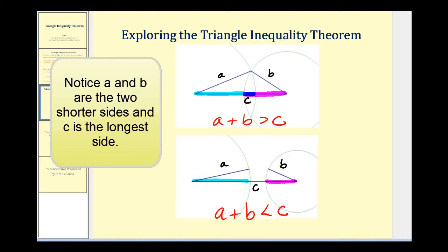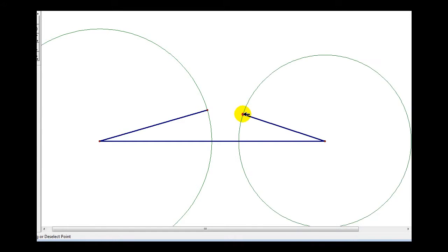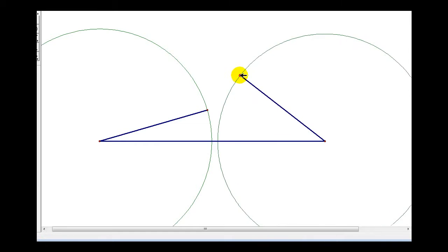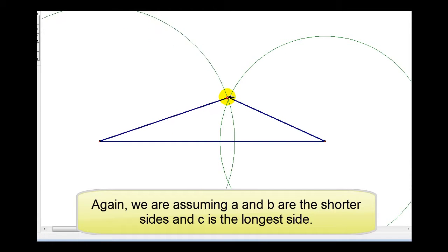To emphasize this even more, let's take a look at an animation. Here we see an example where A plus B is less than C, and you can see as we change this, we're not able to form a triangle until A plus B is greater than C, as we see here. Notice how A plus B would be greater than C, therefore, we would have a triangle.